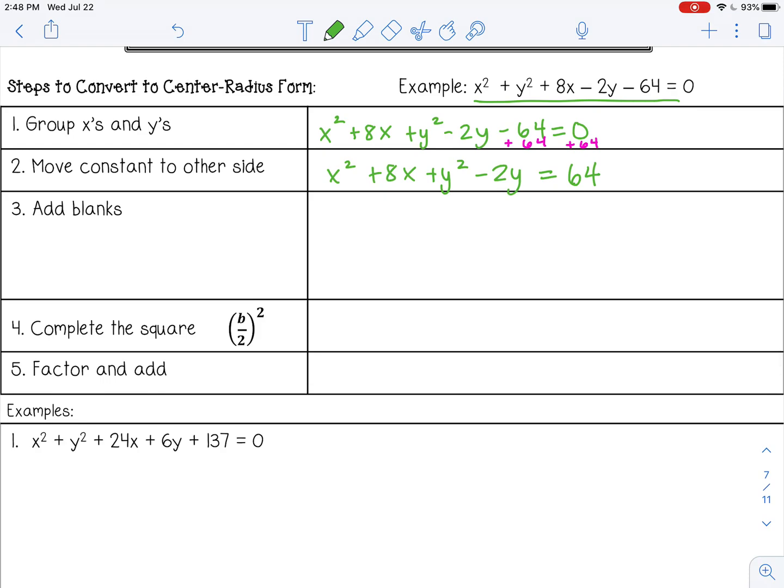Next, I'm going to be adding blanks. So I'm going to write x squared plus 8x plus blank, plus y squared minus 2y plus blank. The reason I'm adding blanks is because we're going to do something called completing the square, which you probably learned in Algebra 1. Because I added two blanks to the left side, I need to keep my equation equal on both sides, so I'm going to add two blanks to the right.